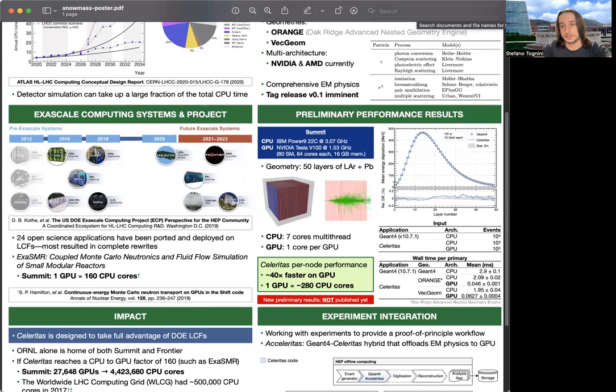We see that the energy deposition is in pretty good agreement with GEANT4, and we also know that Celeritas on a per-node performance runs 40 times faster on GPU than on CPU. Given our multi-thread includes seven cores, that means that one GPU card is equivalent to about 280 CPU cores.